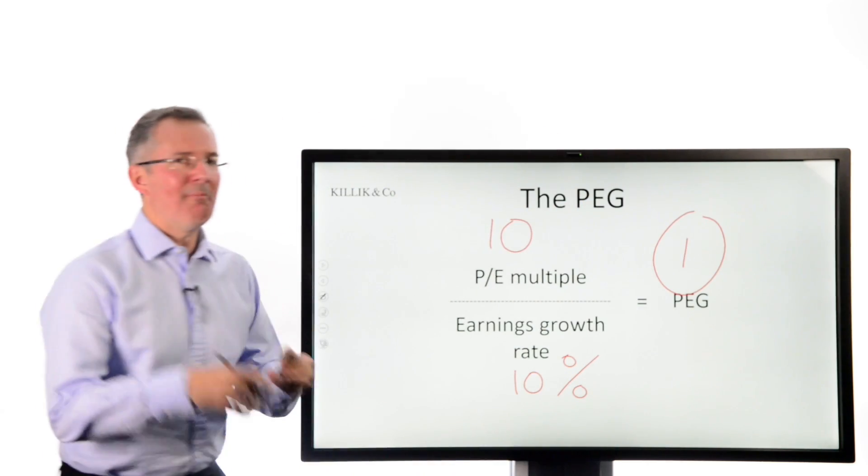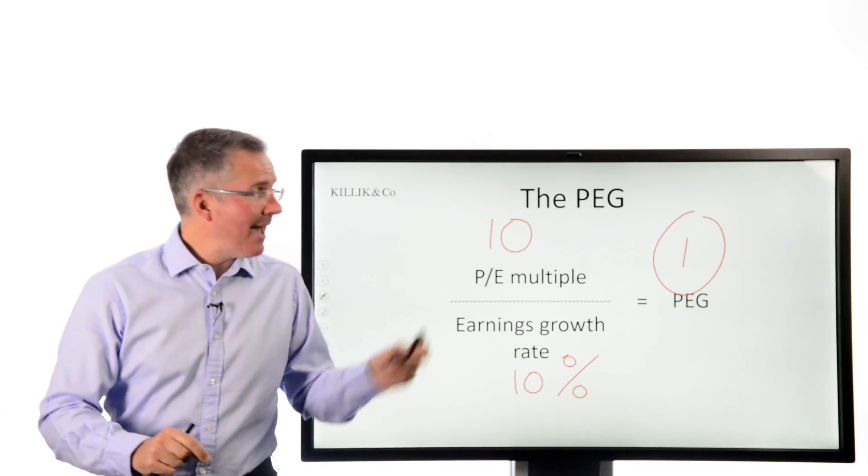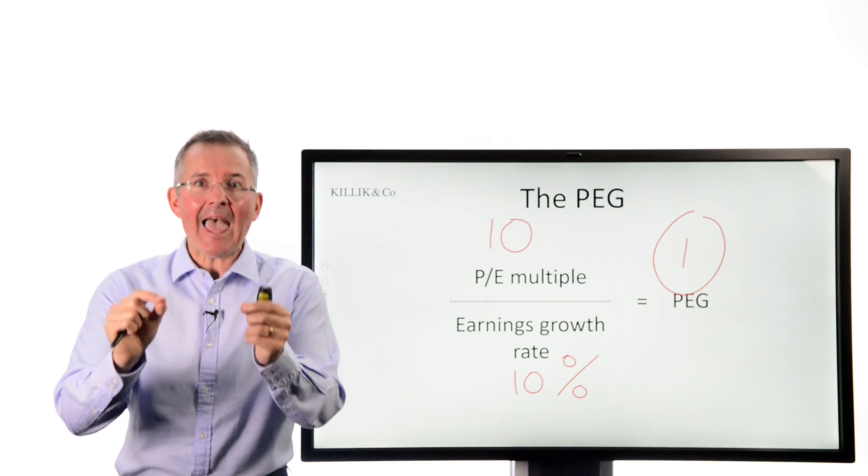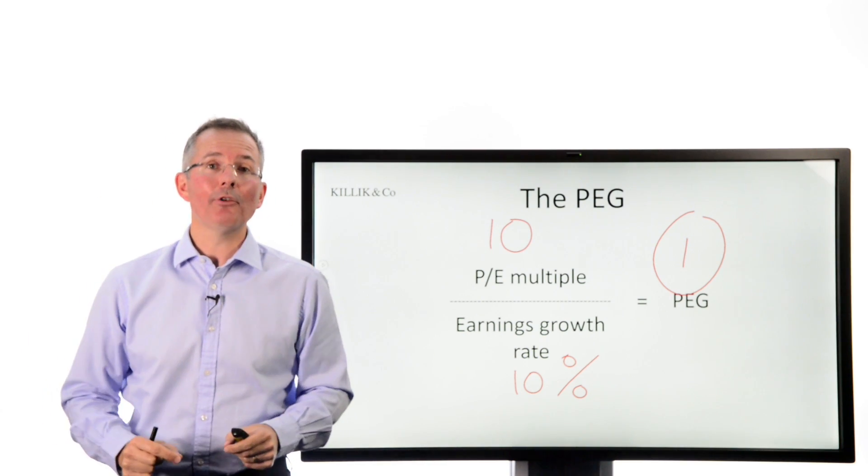And 1 is sort of the magic number for PEGs. Because some people will take one and say what you're actually looking at there is a fairly priced firm or stock. The PE ratio can reflect the expected earnings growth rate.